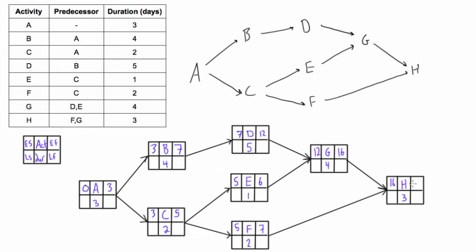Sixteen plus three is nineteen, so right away we know that the planned duration of this project is 19 days. Now we want to find the critical path, so we do the backward pass. We bring the 19 down, and instead of adding the duration we subtract it as we go back. Nineteen minus three gives sixteen. We bring sixteen into both G and F since there are no competing arrows. Starting up at G: sixteen minus four gives twelve.